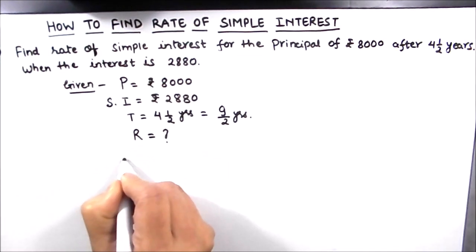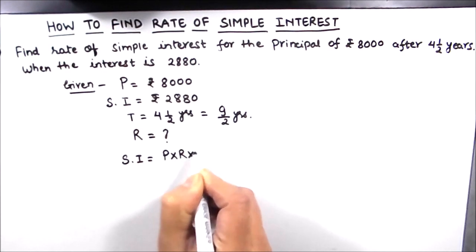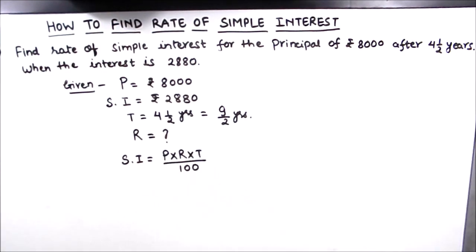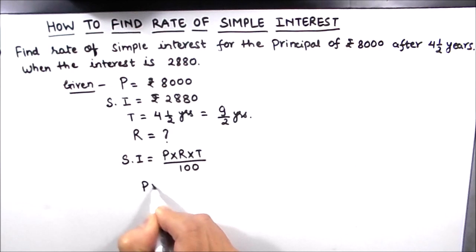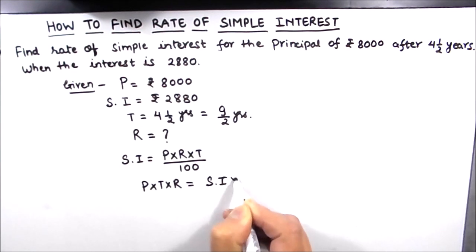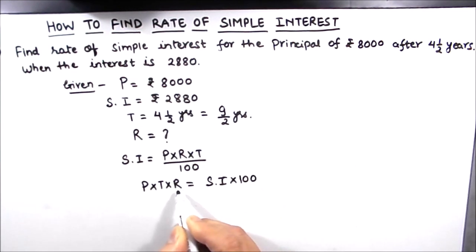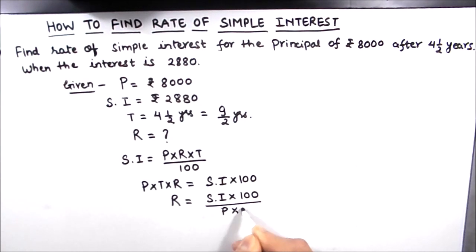So let us now write the formula for finding simple interest, which is: Simple Interest = P × R × T ÷ 100. From this formula we can isolate the rate of interest. By cross multiplication we get P × T × R = Simple Interest × 100. Leaving R on the left hand side and bringing everything else to the right, we get R = (Simple Interest × 100) ÷ (Principal × Time). This is our formula for finding the rate of interest.